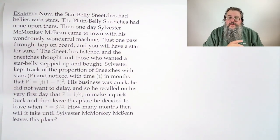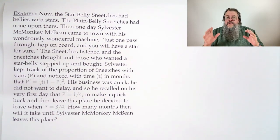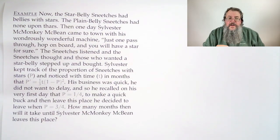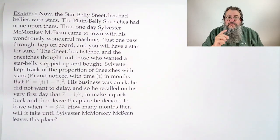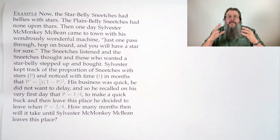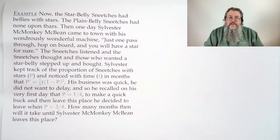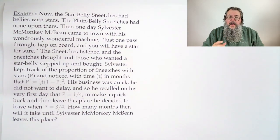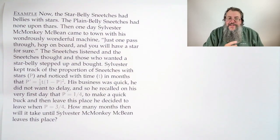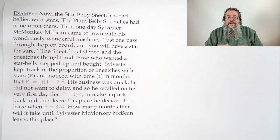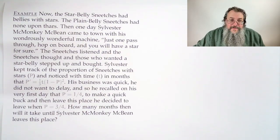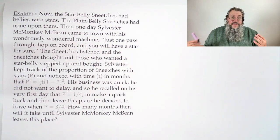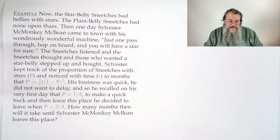His business was quick. He did not want to delay, and so he recalled on his very first day that P equals 1/4, to make a quick buck and then leave this place. He decided to leave when P is 3/4. How many months then will it take until Sylvester McMonkey McBean leaves this place? There's a lot to parse here. If you're not familiar, by the way, with this story, this came from a Dr. Seuss book.